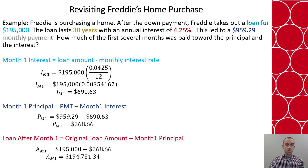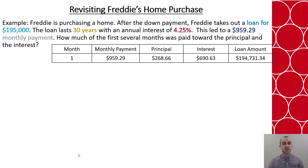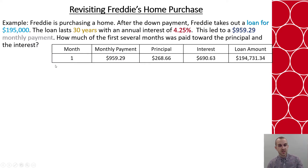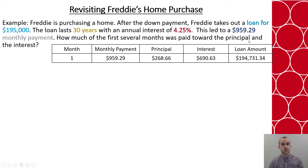So what happens in month two? I've made a table with that information I just calculated. The monthly payment never changes, but our principal and interest will, which means the loan amount will change as well.